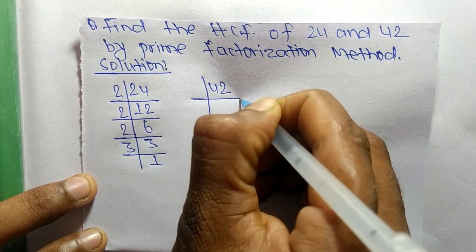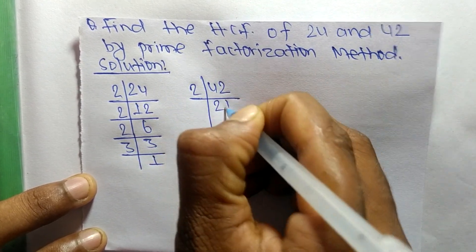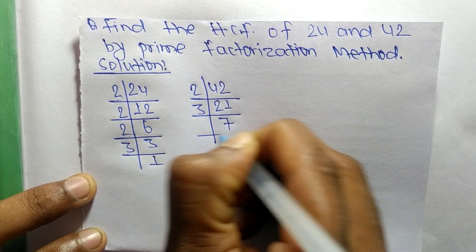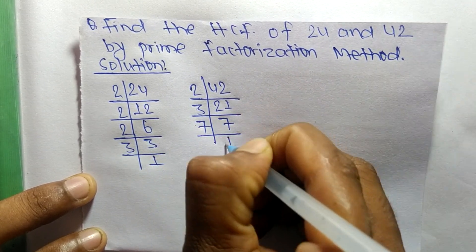The prime factors of 42 are: it is 2 times 21 equals 42, 3 times 7 equals 21, and 7 times 1 equals 7.